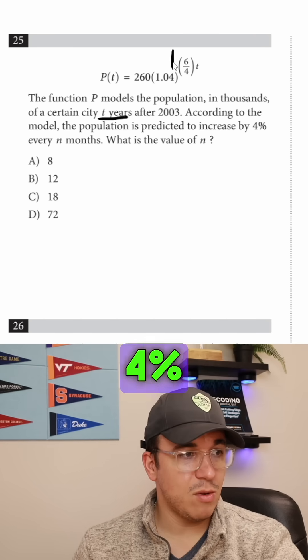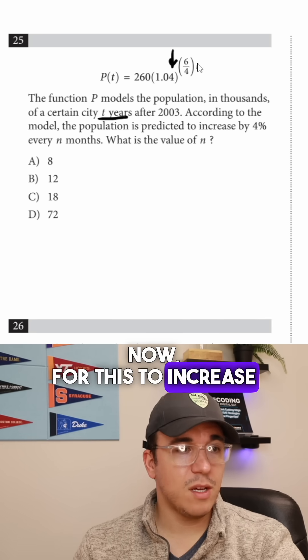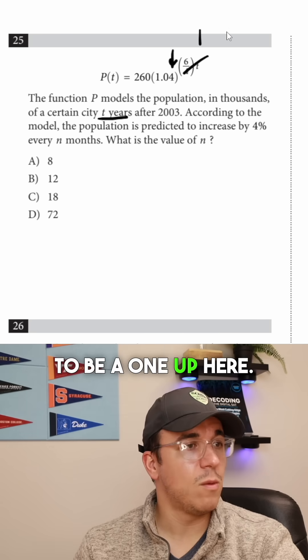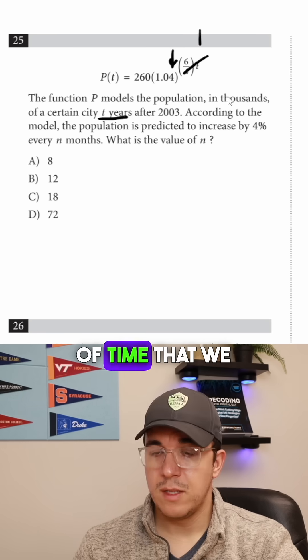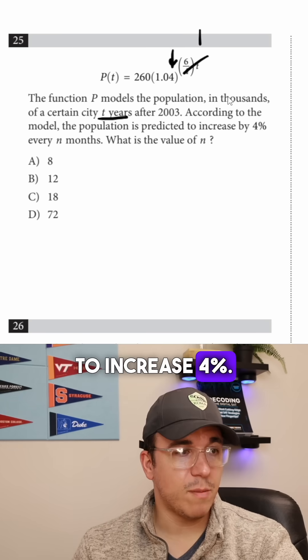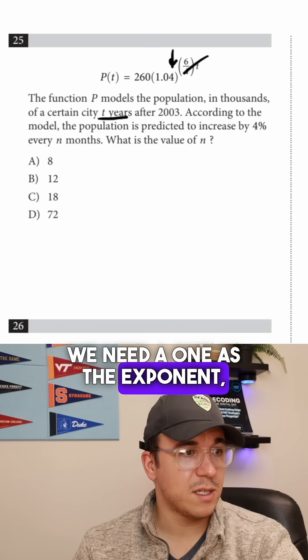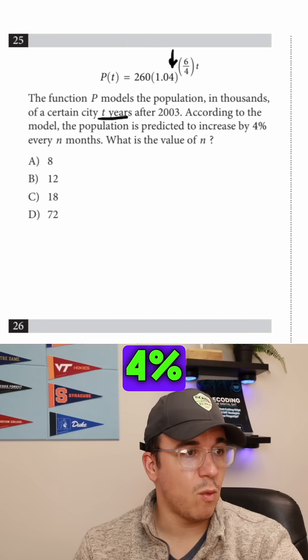We can see we do have the 4% here. Now, for this to increase by 4%, this just needed to be a 1 up here. So that would be the amount of time that we need to increase 4%. We need a 1 as the exponent, because that would represent 4% increase.